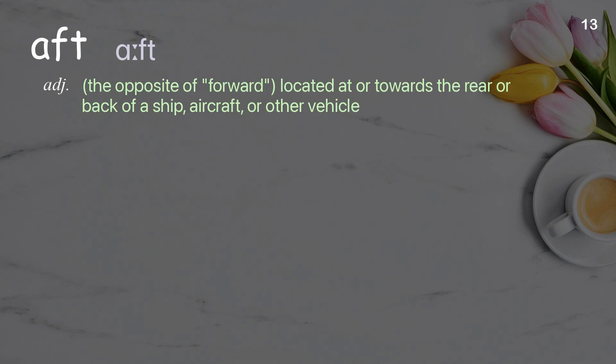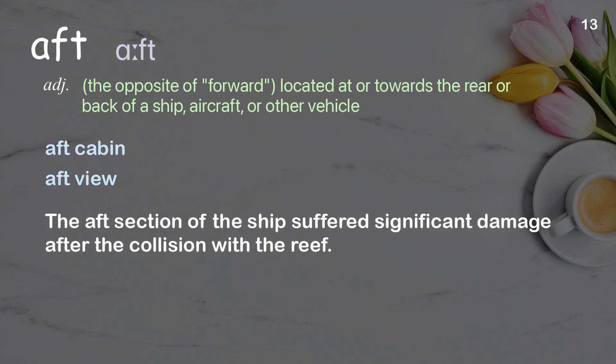Aft: The opposite of forward, located at or towards the rear or back of a ship, aircraft, or other vehicle. Examples: Aft cabin. Aft view. The aft section of the ship suffered significant damage after the collision with the reef.